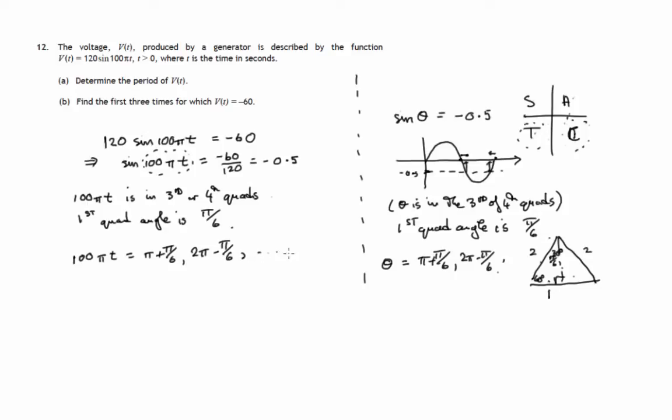Now there are others. And we get that from the next cycle where the value of negative 0.5 occurs again here, which is 2 pi radians further along. It's one complete cycle on from the first solution. So we have to add 2 pi to this solution. So we'd have pi plus pi upon 6 plus another 2 pi. But these are the first three times for which we get a value of negative 60.